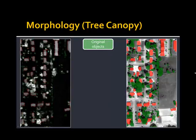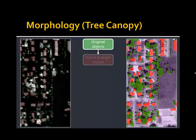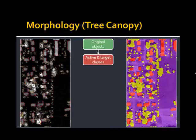One downside of threshold-based feature extraction from LiDAR is that we end up with very jagged edges. The tree canopy depicted in green has an unrealistic shape that's not very cartographically pleasing. So we designed a growing and shrinking routine — reusable with minor changes — to perform morphology operations on a target and active class. In this case, the active class we want to grow and shrink is the tree canopy, assigned to yellow, and the areas to grow into are assigned to the target class depicted in purple.